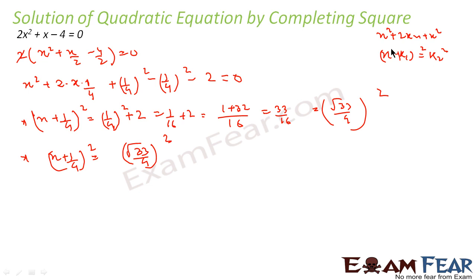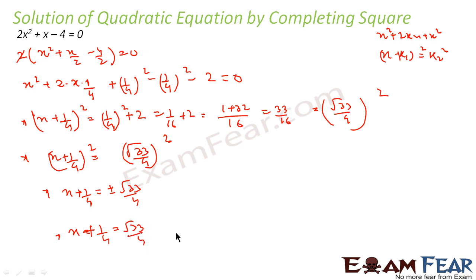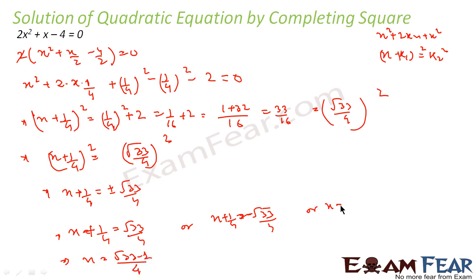This is the form (x + k₁)² = k₂². So x + 1/4 = ±√33/4. Case 1: x + 1/4 = √33/4, giving x = (√33 - 1)/4. Case 2: x + 1/4 = -√33/4, giving x = (-√33 - 1)/4.